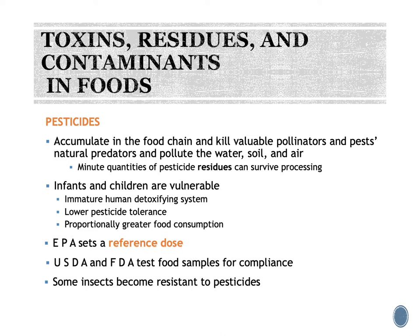One possibility for reducing pesticide exposure is to choose more organic foods, particularly for kids and infants. Pesticides are regulated by the EPA, which has set a reference dose for the maximum residue allowed on food, and they evaluate different farms — particularly those with high production of certain foods — using research on lab animals to determine safe limits. The typical pesticide exposure in the U.S. is 10,000 times below the level at which they have identified risk.